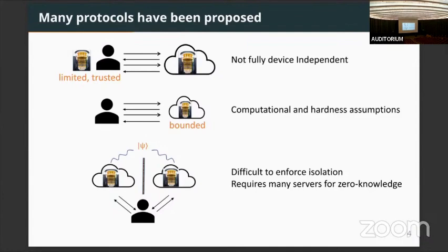However, in this case we make some computational assumptions which haven't been proved to be true, and a more powerful quantum server may be able to cheat. There are also protocols based on non-local games, which assume you have multiple isolated quantum servers and use self-testing techniques to verify the quantum servers perform the desired computations. However, in this case you require many servers for zero-knowledge. It was shown by Yuen and Slofstra that you need six servers, and recently proved by Mastel and Slofstra that you only need two — but still, you need multiple servers.